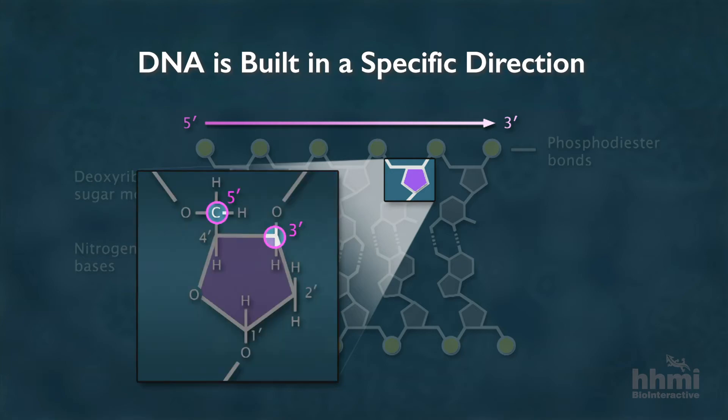The five prime and three prime positions are used to show the orientation, or direction, of a DNA strand. During DNA replication, enzymes build DNA strands by adding nucleotides in the five prime to three prime direction.